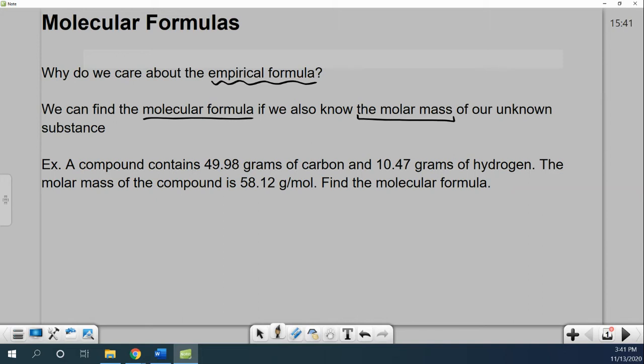Let's take a look at how we do that. Example: a compound contains 49.98 grams of carbon, 10.47 grams of hydrogen. So a very similar start. I mean, we got percent last time, but we'll just give you the grams right away. And we know the molar mass is 58.12 grams per mole. Find the molecular formula. So as we said, we can get the molecular formula if we know the empirical. So let's do that first.